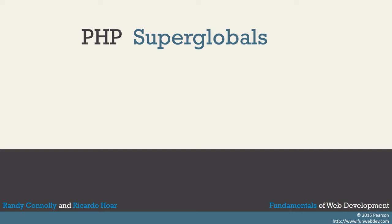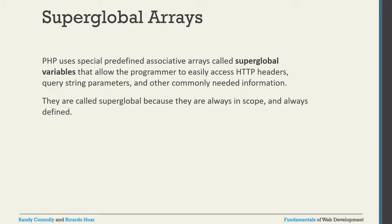Today I will discuss PHP Superglobals. This is a very important topic for web applications when using PHP. A Superglobal is just like an array in PHP but uses a predefined associative array. That's why they are called Superglobal variables — they allow the programmer to easily access HTTP headers, query string parameters, and other needed information.